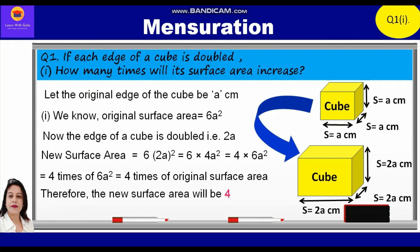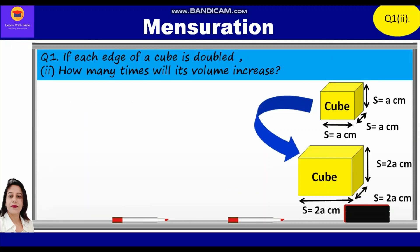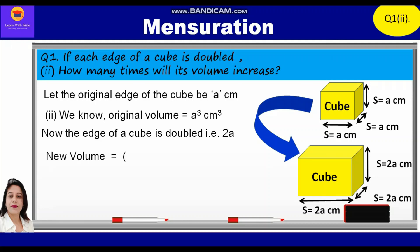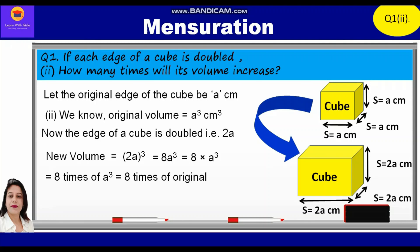Now let's solve the second part. Let the original edge of the cube be 'a' centimeters. We know the original volume is equal to a³. Now the edge of a cube is doubled, that is 2a. New volume is equal to (2a)³ = 8a³ = 8 × a³ = 8 times of the original volume. Therefore, the new volume will be 8 times the original volume.